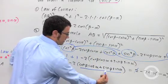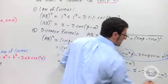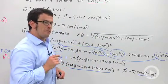Cosine beta cosine alpha plus sine beta sine alpha equals this, cosine of beta minus alpha. That's our formula.